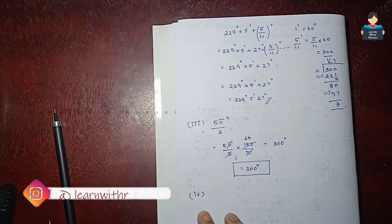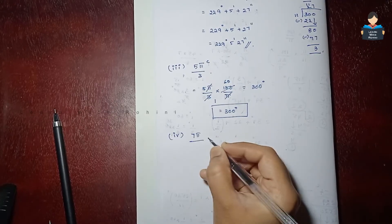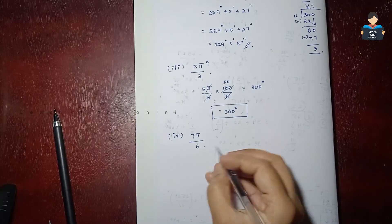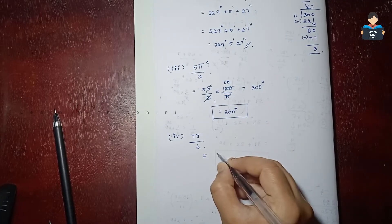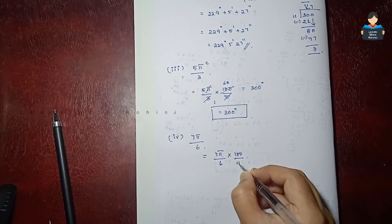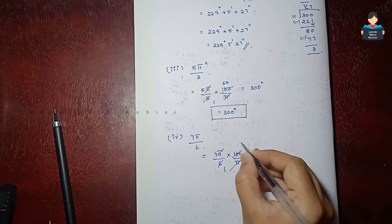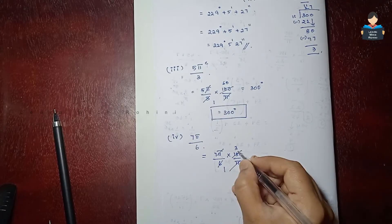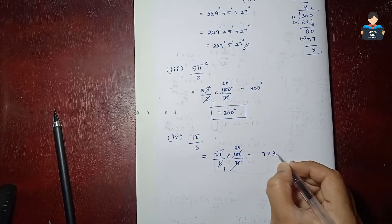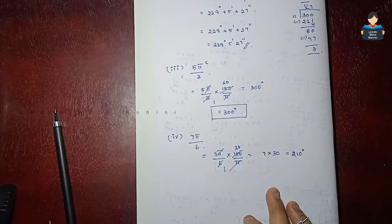Now the fourth subdivision. We have 7 pi by 6 radian. We multiply by 180 by pi. The pi cancels, and 7 by 6 into 180: 6 cancels with 180 giving 30, then 7 into 30 equals 210 degrees.